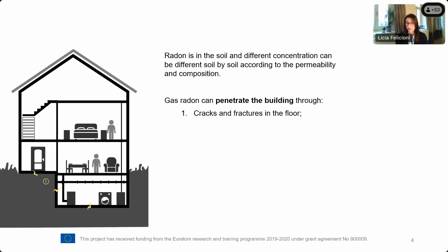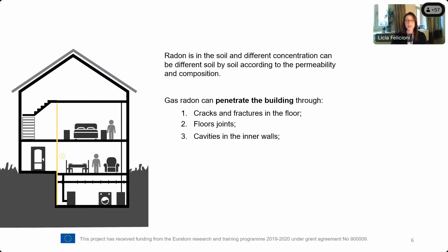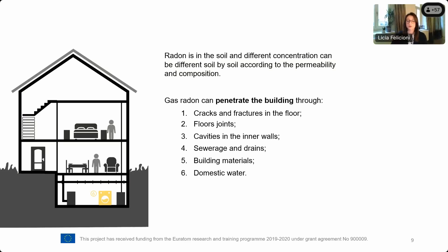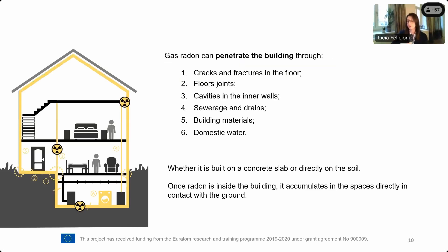Radon is a naturally occurring gas and its concentration differs soil by soil according to the permeability and composition of the ground. Radon gas can penetrate buildings through different pathways: cracks and fractures at foundation level, floor joints, cavities in inner walls, sewerage and drains, building materials, and in small amounts from domestic water. Once inside a building, radon tends to accumulate in spaces directly in contact with the ground. If those areas are habitable rooms, it can be very dangerous as radon can be inhaled and tends to accumulate in the lungs. As the RADOCONTROL project highlights, radon is the second cause of lung cancer after tobacco smoking.